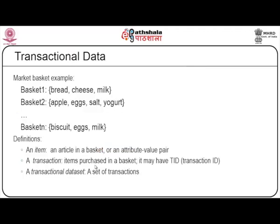Let us do a small survey on transactional data for market basket analysis. For this example, assume basket 1 carries bread, cheese and milk; basket 2 carries apple, eggs, salt and yogurt; up to basket n, which has biscuit, egg and milk. From this, very common questions arise: what are the common items that are purchased? By looking at these items, we can conclude on one or two items.